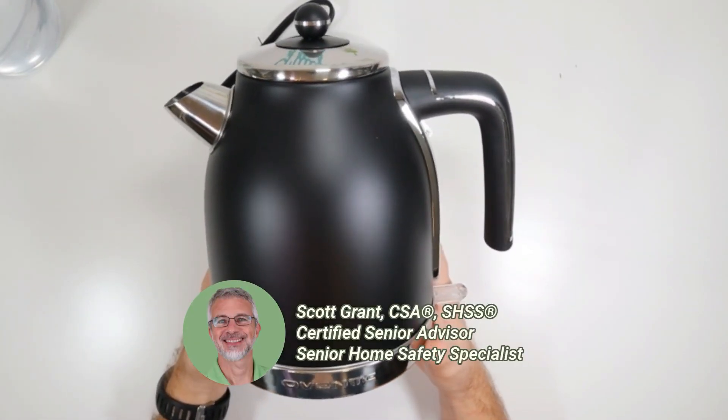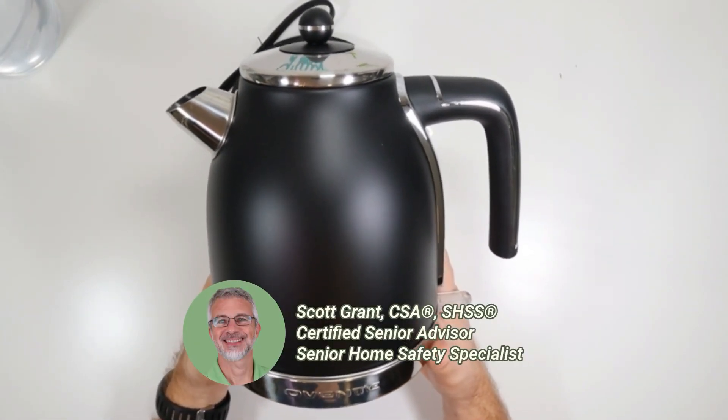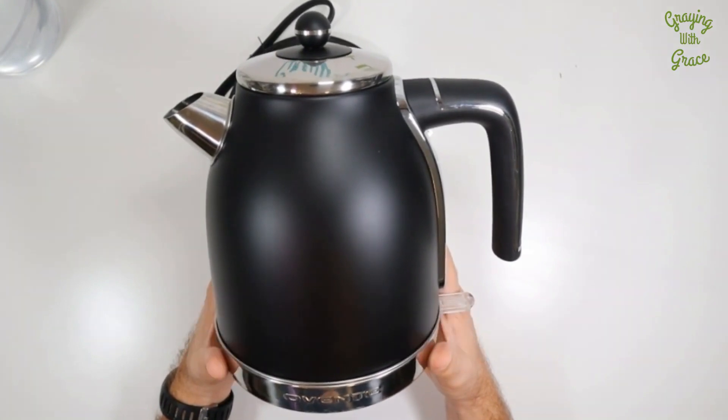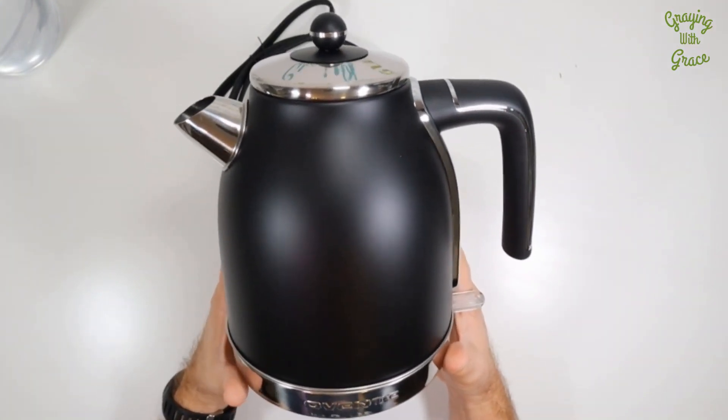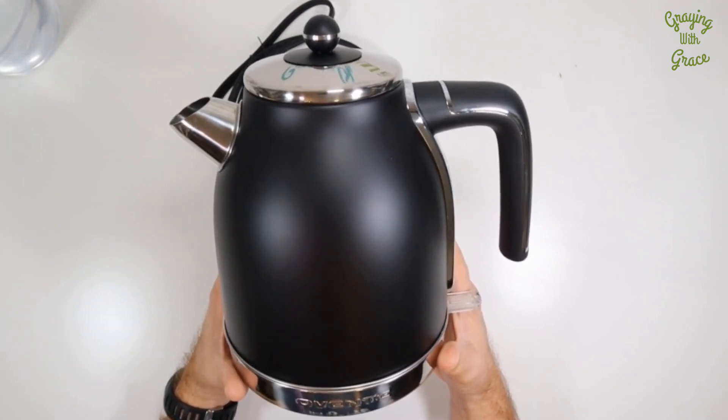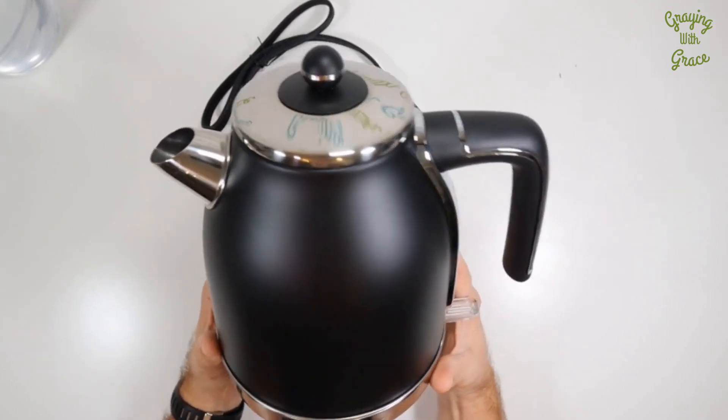Hey there, my name is Scott Grant. I'm a certified senior advisor and senior home safety specialist at Graying with Grace. This is the Oventi electric tea kettle, which has some great features for people that want an easy-to-use electric tea kettle that heats water up quickly.